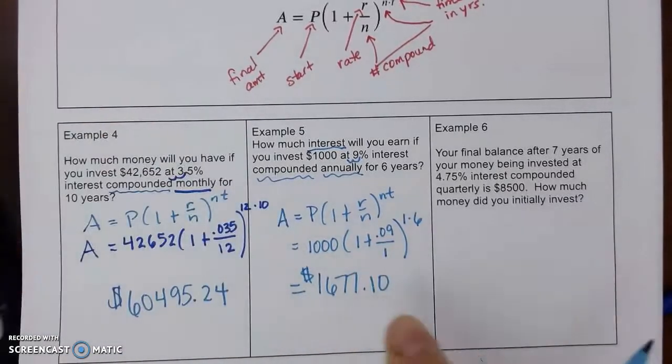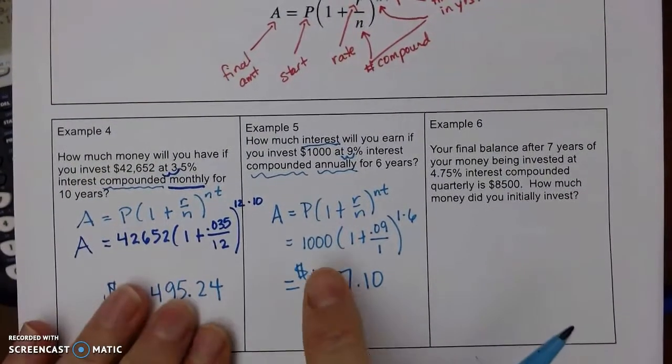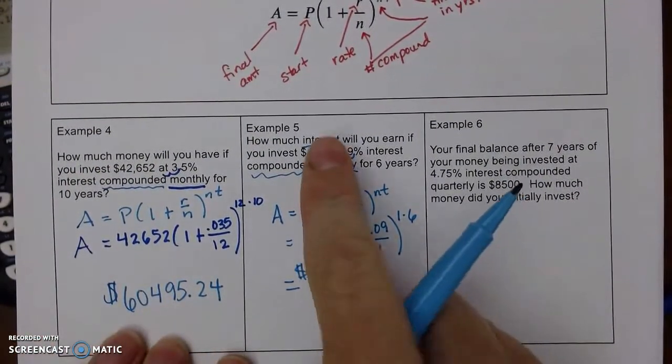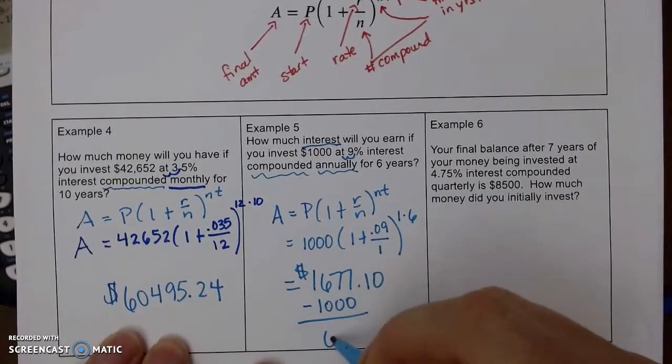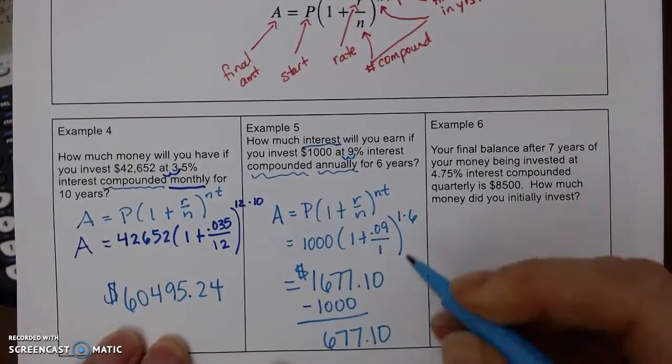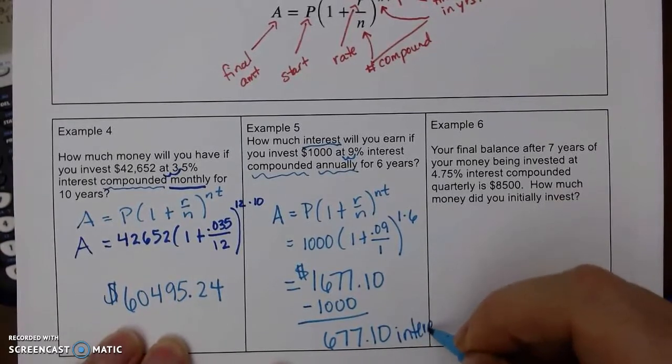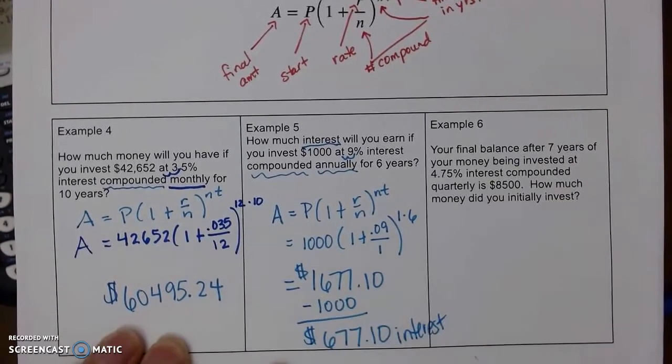Now, remember, that includes my interest and my principal. So, all they want to know is the interest. So, if I take off my principal, that means I got $677 in interest, which is what they asked for.